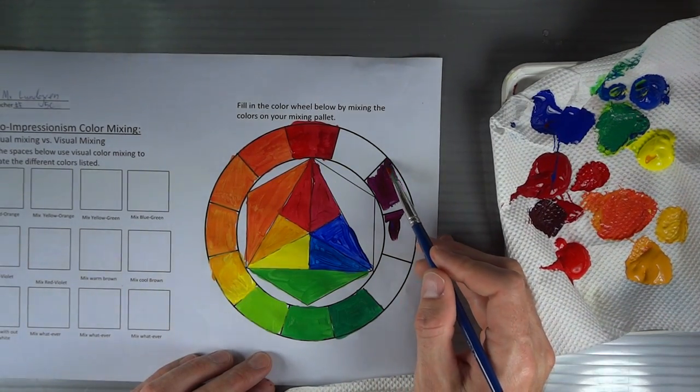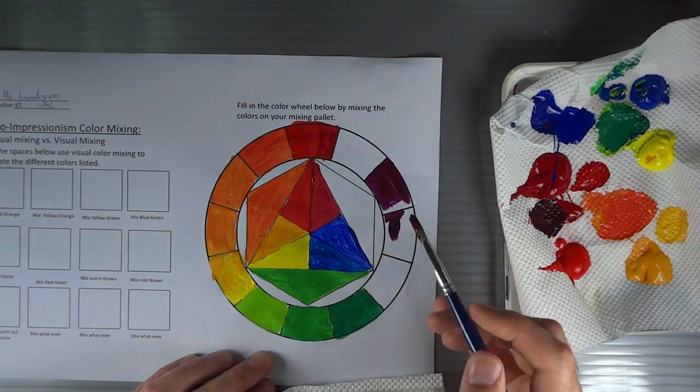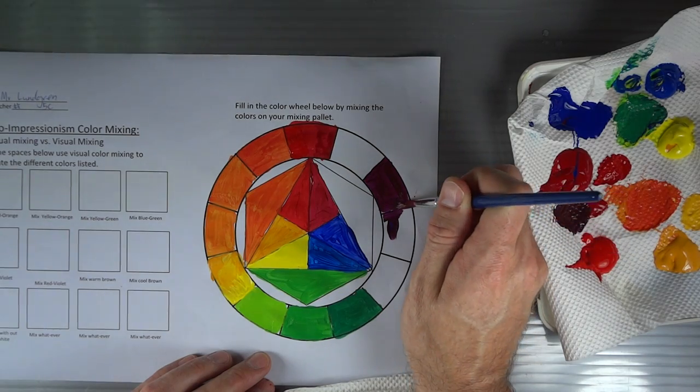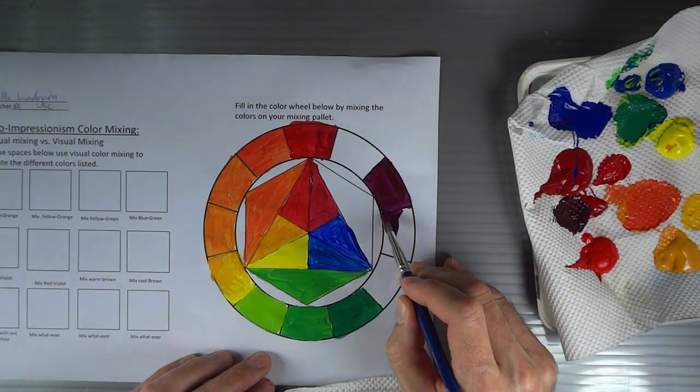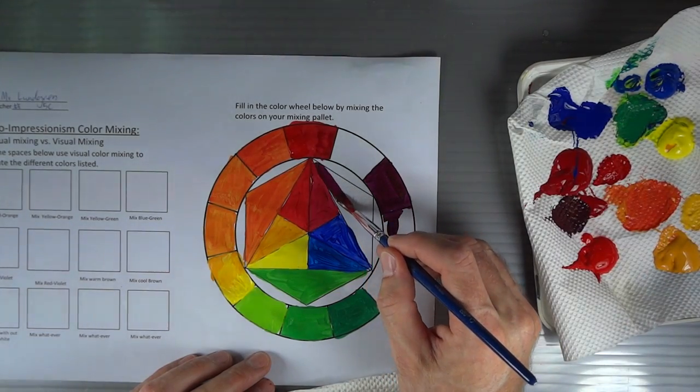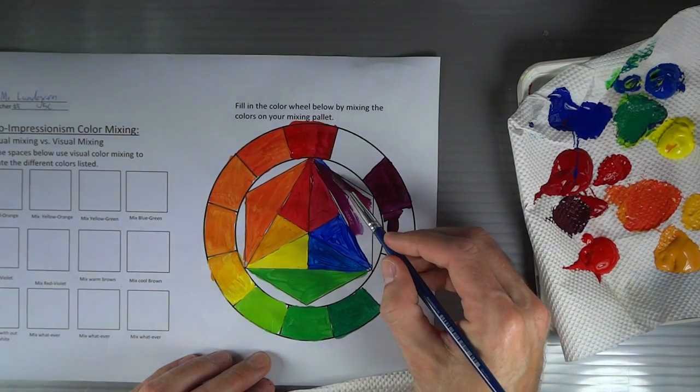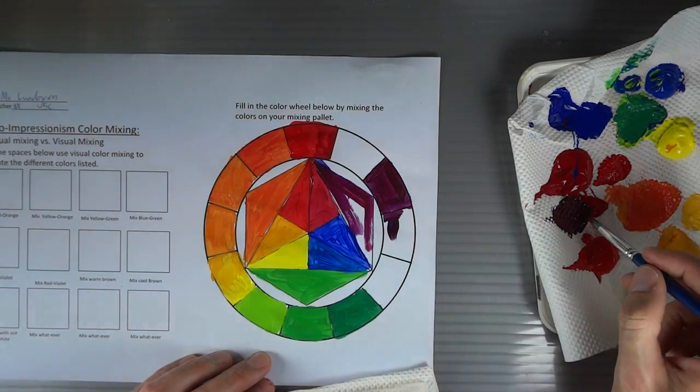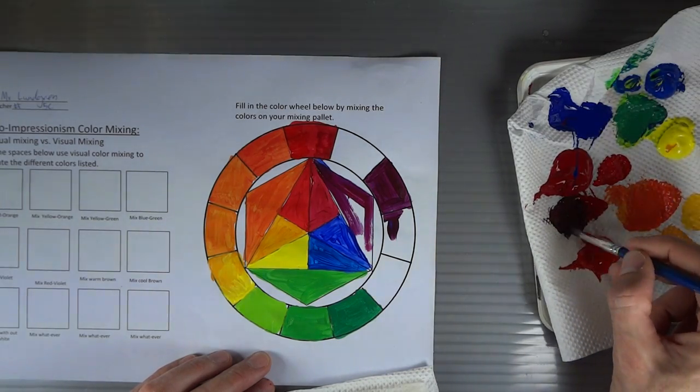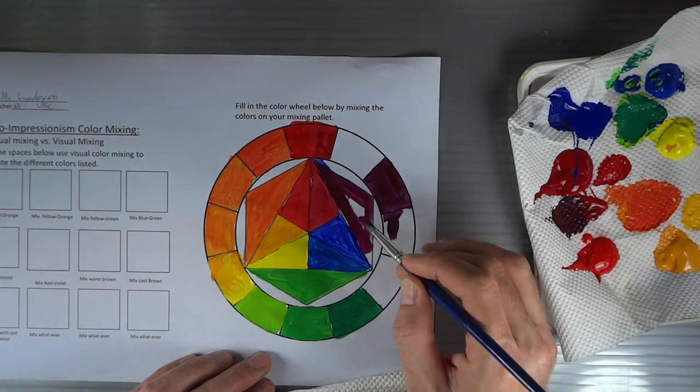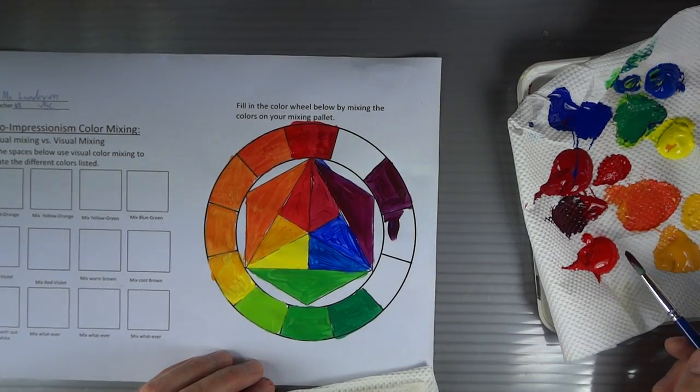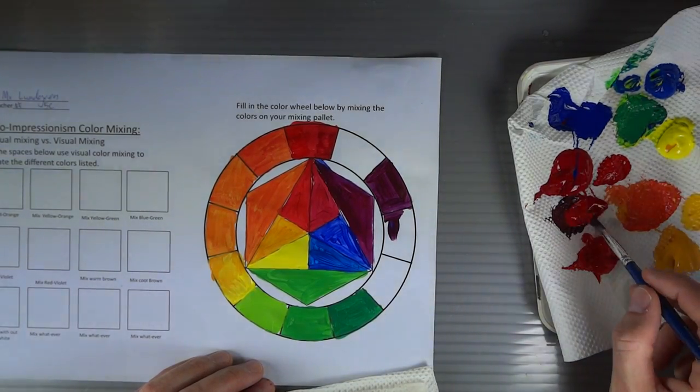This is our medium secondary color violet that would go right here in the middle. So I'm gonna paint it in the secondary slot there and paint it in the secondary triangle here. You might have to mix more as you go. Now I'm gonna add a little bit more red since red is the weaker color I'm gonna go there first.